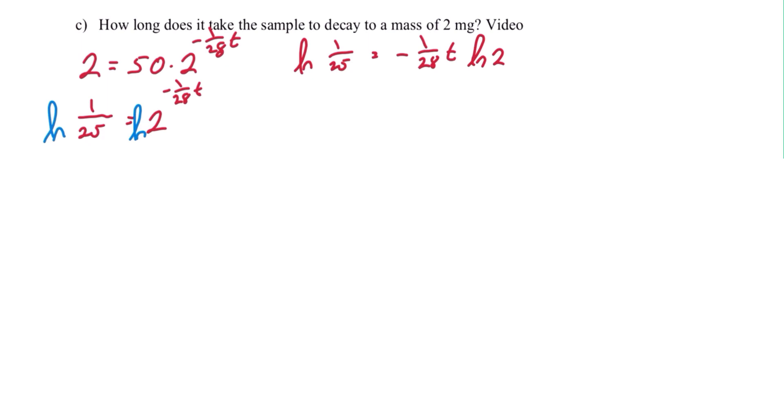Now to isolate time, the t, we need to divide by negative 1 over 28 natural log of 2. So we have ln of 1 over 25 divided by negative 1 over 28 ln of 2.